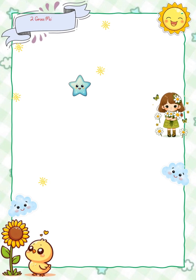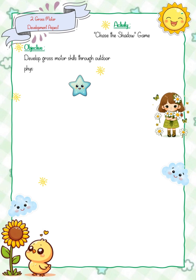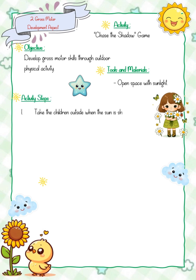Activity two, gross motor development aspect: chase the shadow game. Objective: develop gross motor skills through outdoor physical activity. Tools and materials: open space with sunlight. Activity steps: one, take the children outside when the sun is shining brightly. Two, explain that they will play a game of chasing shadows.